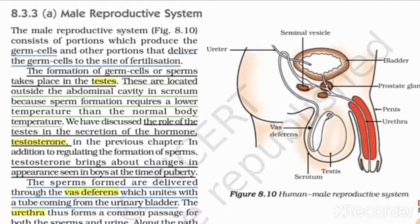Remember this point: the testes are located outside the abdominal cavity in the scrotum. They are located there because sperm formation requires a lower temperature than the normal body temperature. That is why the testes are present outside the abdominal cavity in the scrotum.